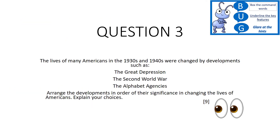Let's have a go at trying a question all together. We've got: 'The lives of many Americans in the 1930s and 1940s were changed by developments such as the Great Depression, the Second World War, and the Alphabet Agencies. Arrange the developments in order of their significance in changing the lives of Americans. Explain your choices.' Nine marks.